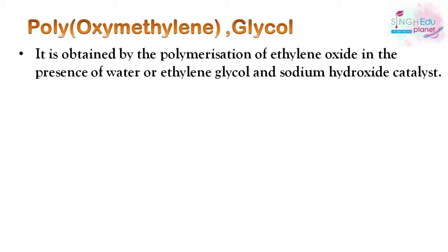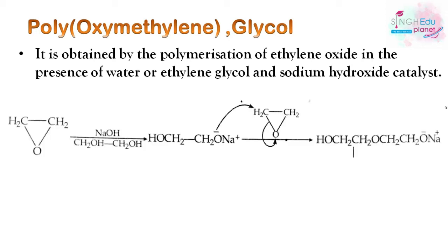Sodium hydroxide is used as the catalyst. Ethylene glycol's OH group attaches to the CH2 group of ethylene oxide to initiate the chain. As more ethylene oxide is added, the polymeric chain increases, with two carbon units adding each time.